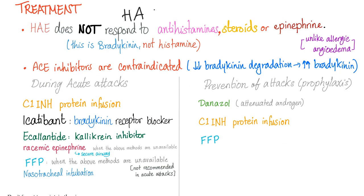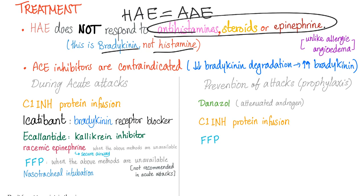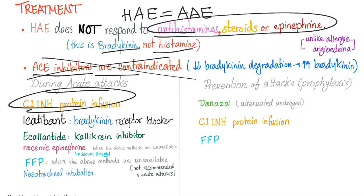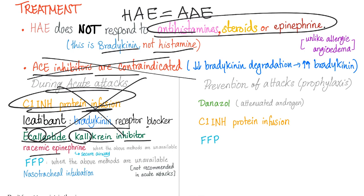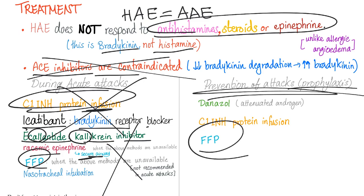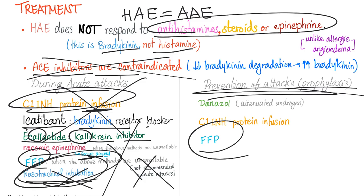Treatment of hereditary angioedema is the same as acquired angioedema. Do not give antihistamines or epinephrine first-line, because it's not an allergy — it's bradykinin, not histamine. ACE inhibitors are contraindicated. In acute attacks, use C1 inhibitor by infusion, icatibant (a bradykinin receptor blocker), or ecallantide (a kallikrein inhibitor). If those are unavailable, use racemic epinephrine to help the airways, or fresh frozen plasma. Intubation or tracheostomy may be necessary in severe cases.